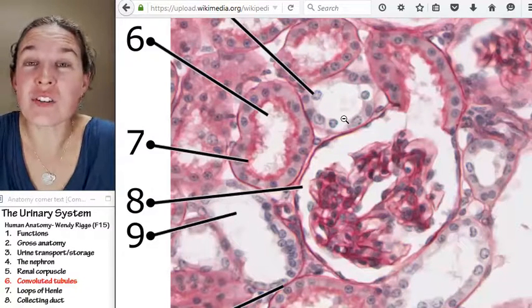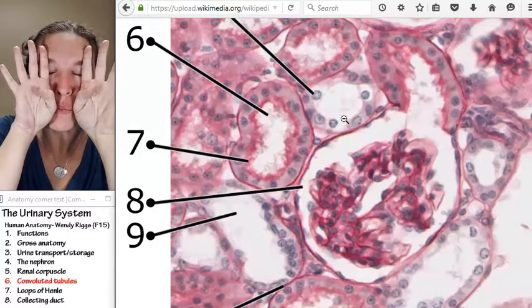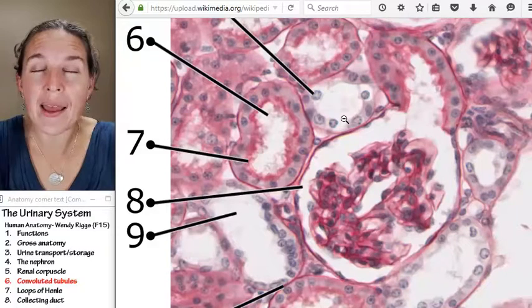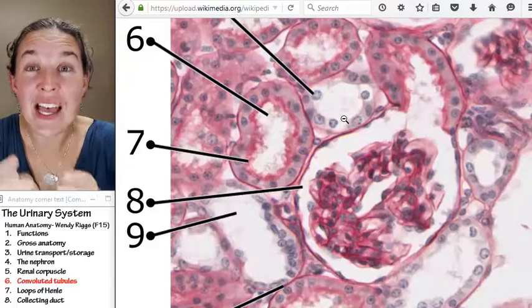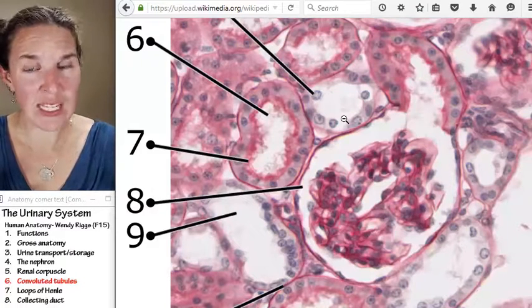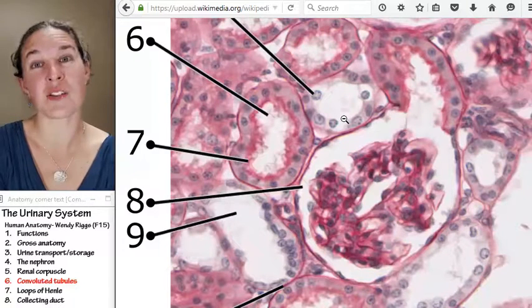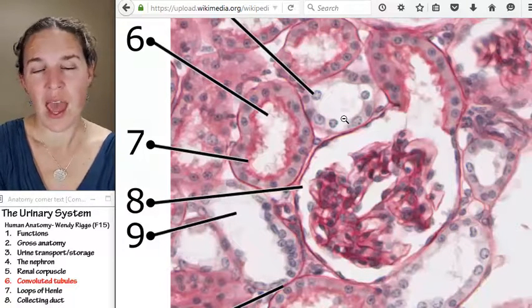Proximal convoluted tubule has microvilli on the luminal border. Why? Because 70% of all the filtrate that you filtered out, 70% of your 180 liters gets reabsorbed by the proximal convoluted tubule cells. How do they do it?